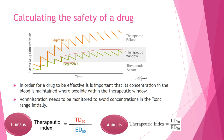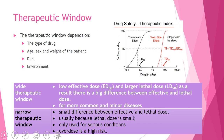You need to be able to describe the therapeutic window and define the therapeutic index in both humans and animals. In humans, the therapeutic index is given by TD15 divided by ED50 — remember, the larger the number, the safer the drug. In animals, it is LD50 divided by ED50.